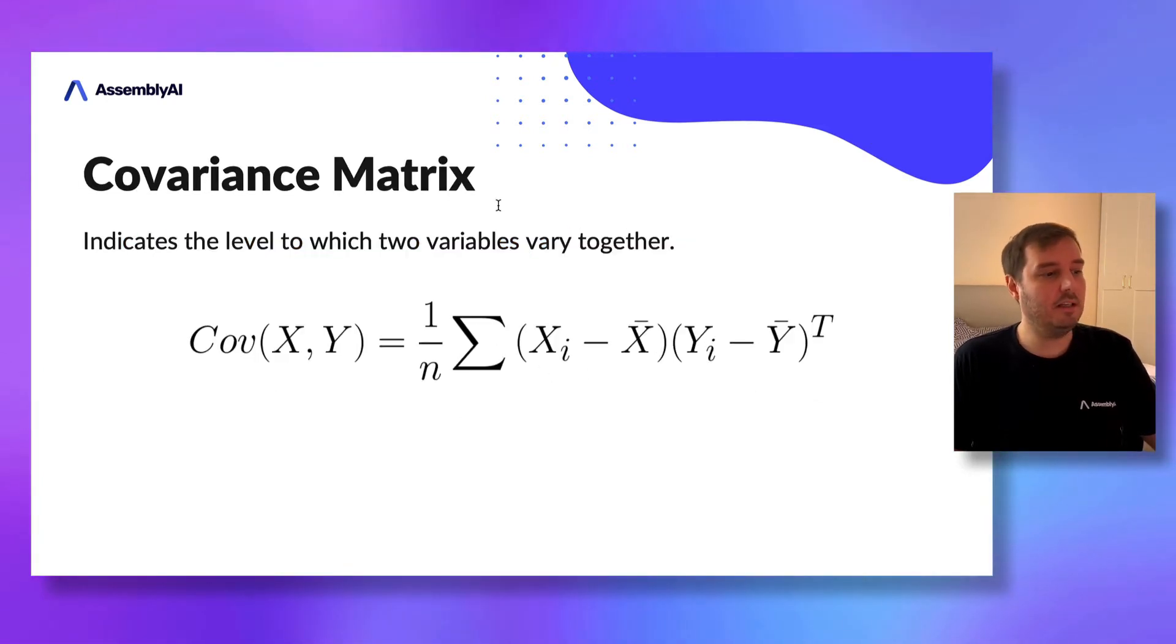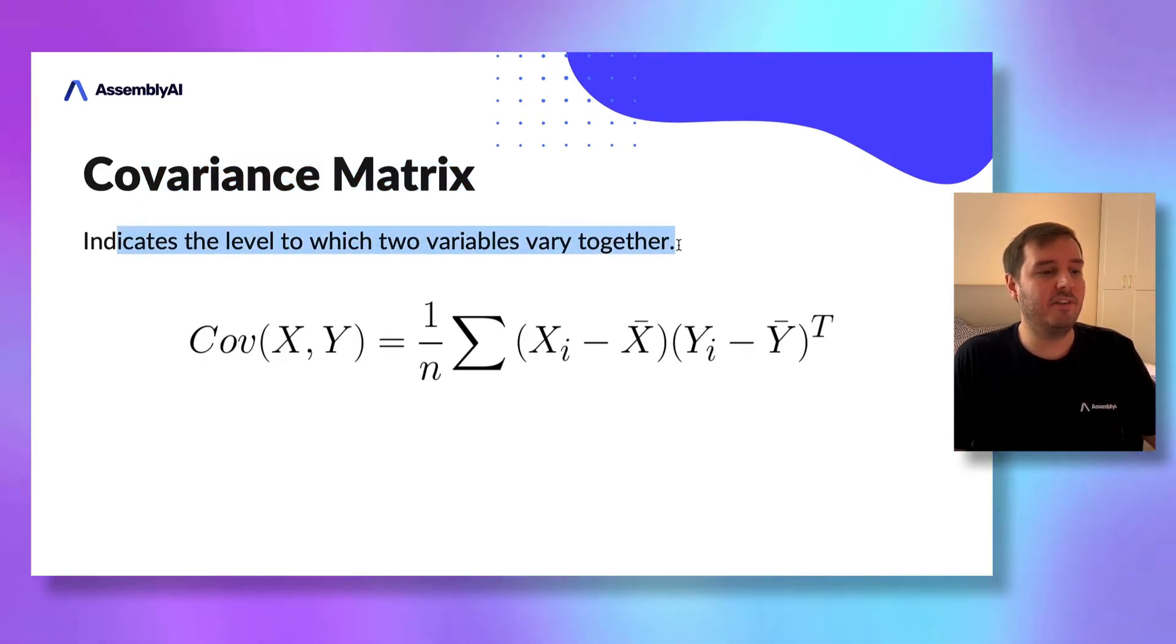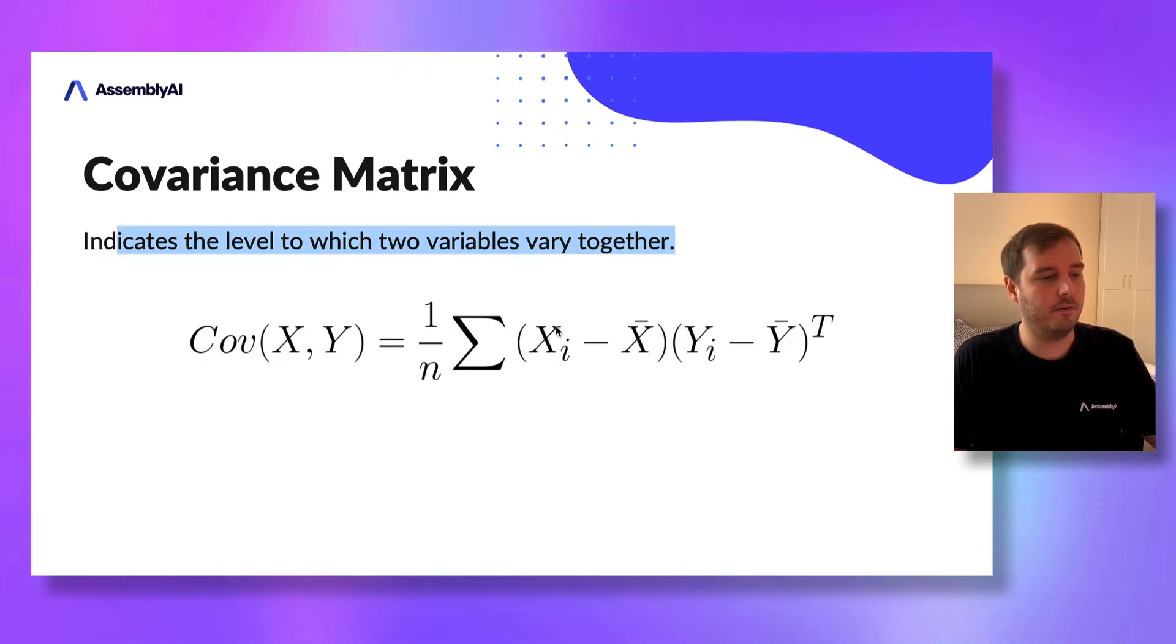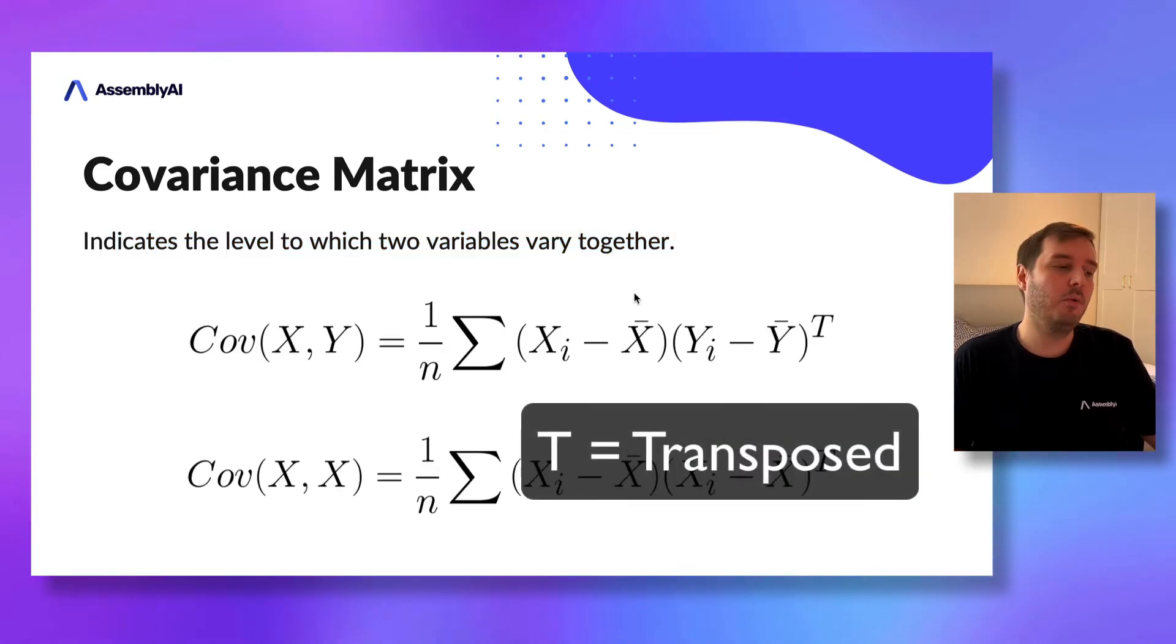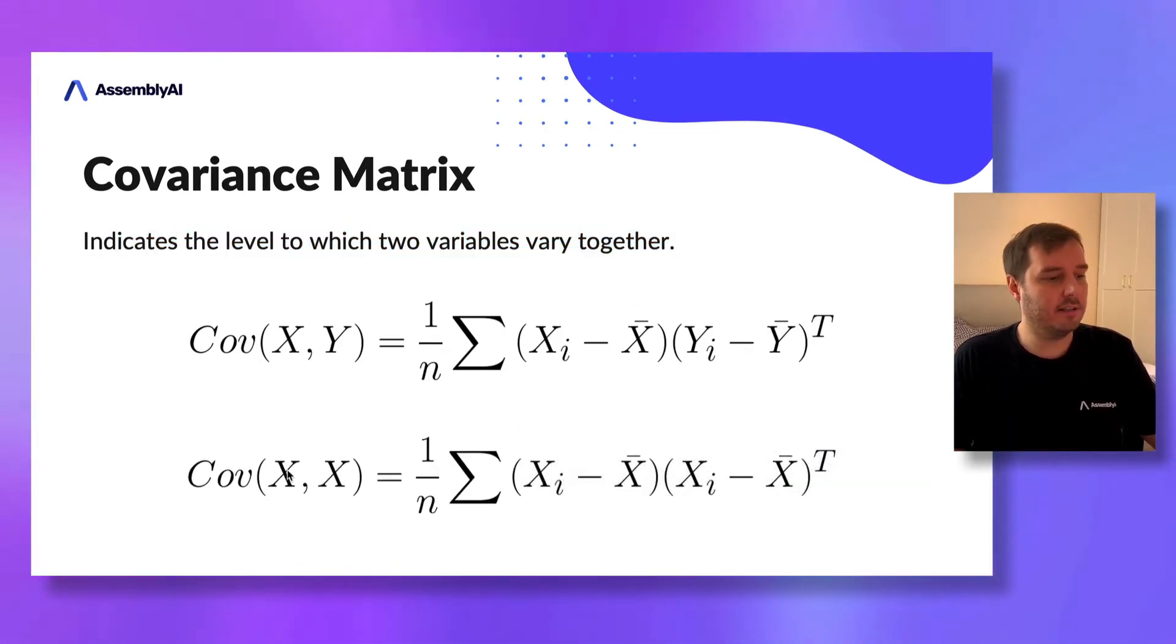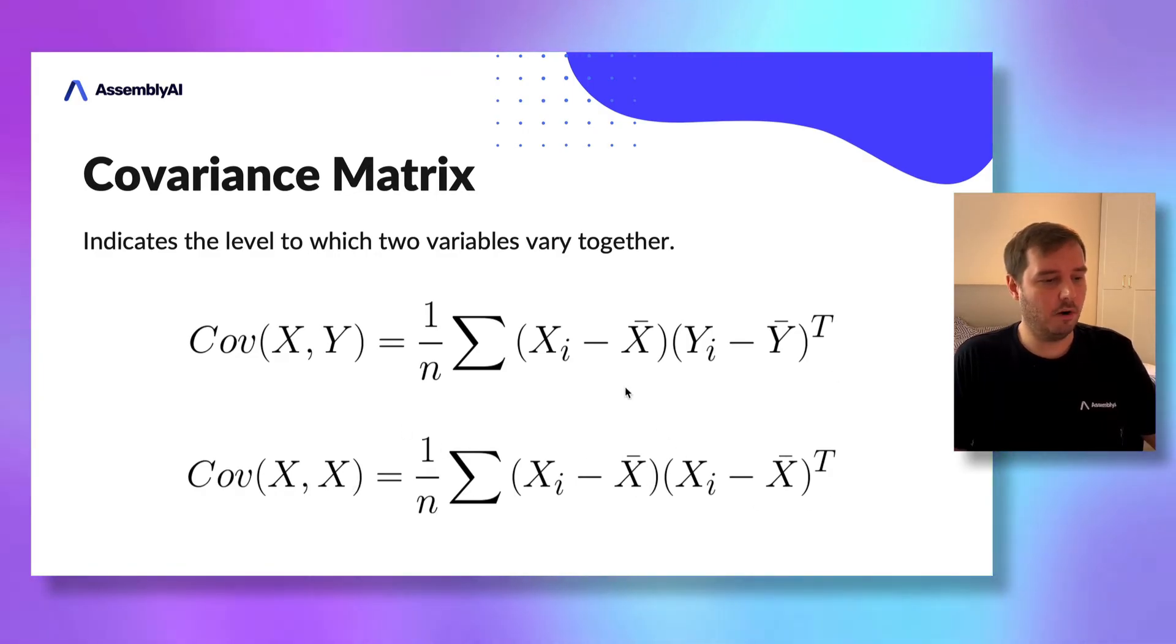We also need the covariance matrix, which indicates the level to which two variables vary together. The formula for covariance of X and Y is Cov(X,Y) = 1/n times the sum of (X - X̄)(Y - Ȳ)ᵀ. We can also calculate the covariance of X with X itself.